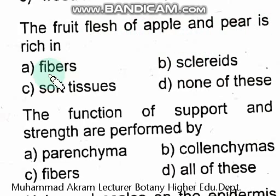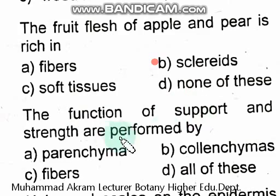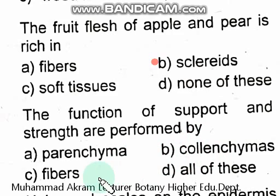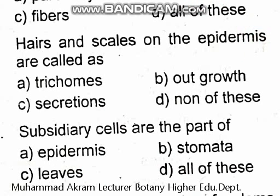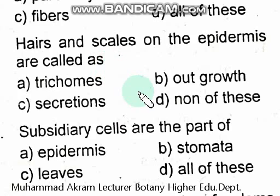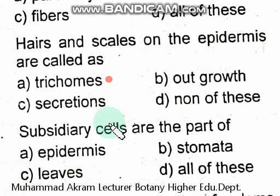The fruit flesh of apple and pear is rich in sclereids — the right option is sclereids. The functions of support and strength are performed by fibers. Hairs and scales on the epidermis are examples of trichomes — the right option is option A, trichomes.